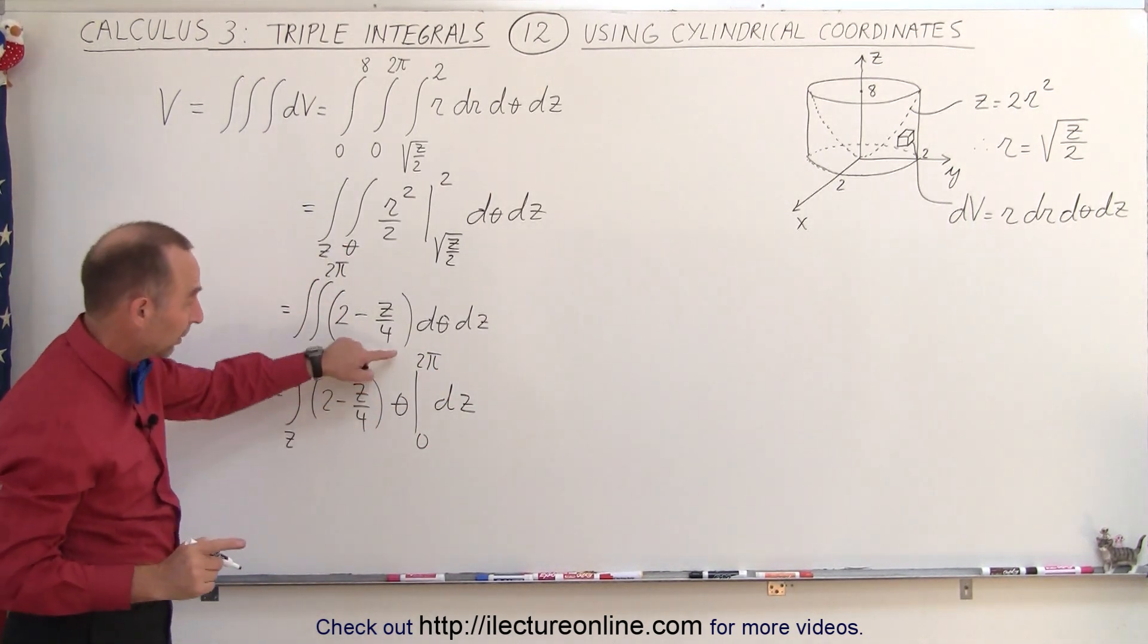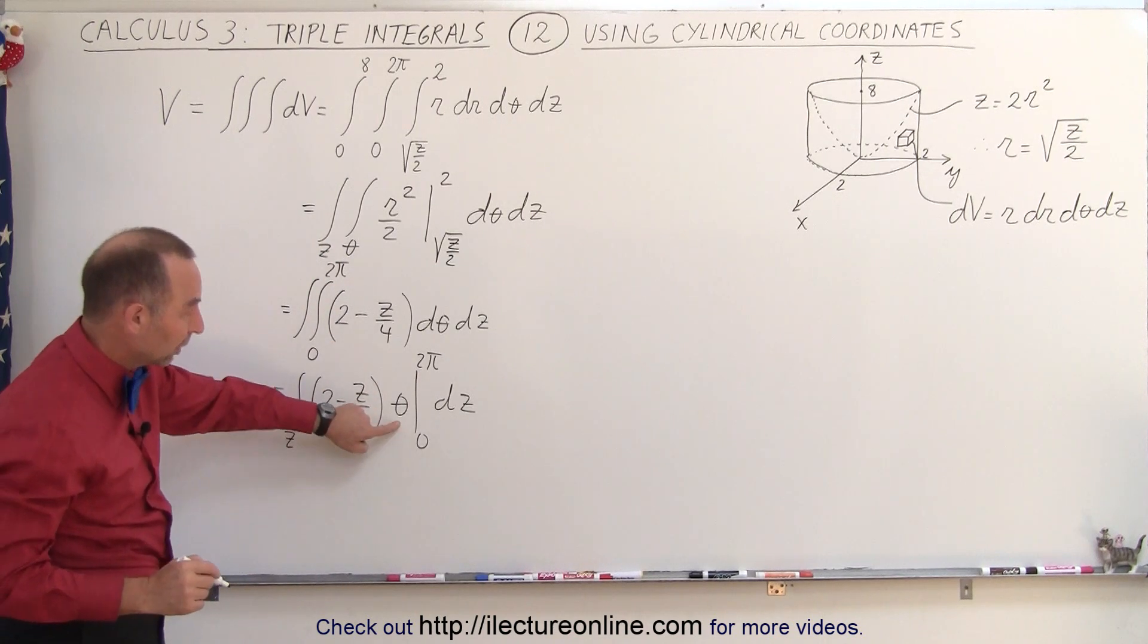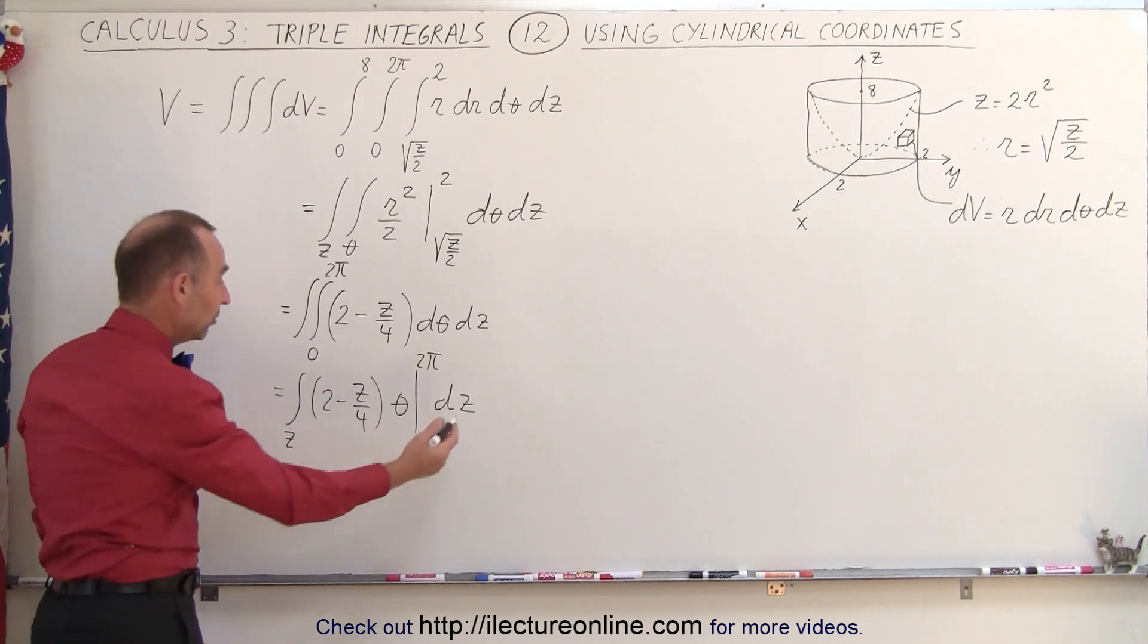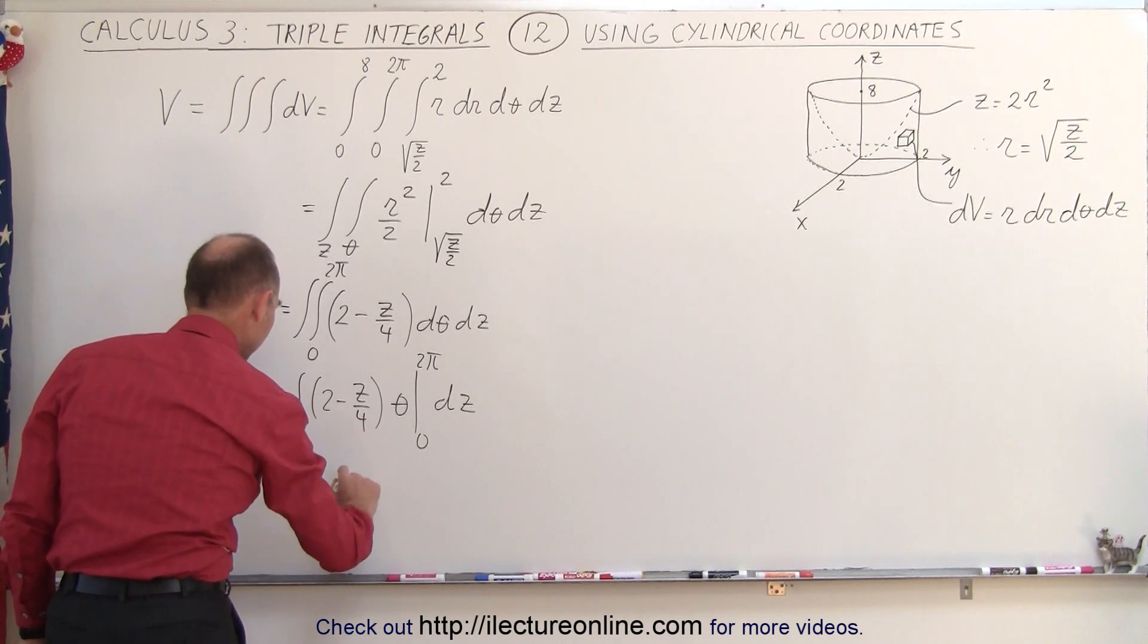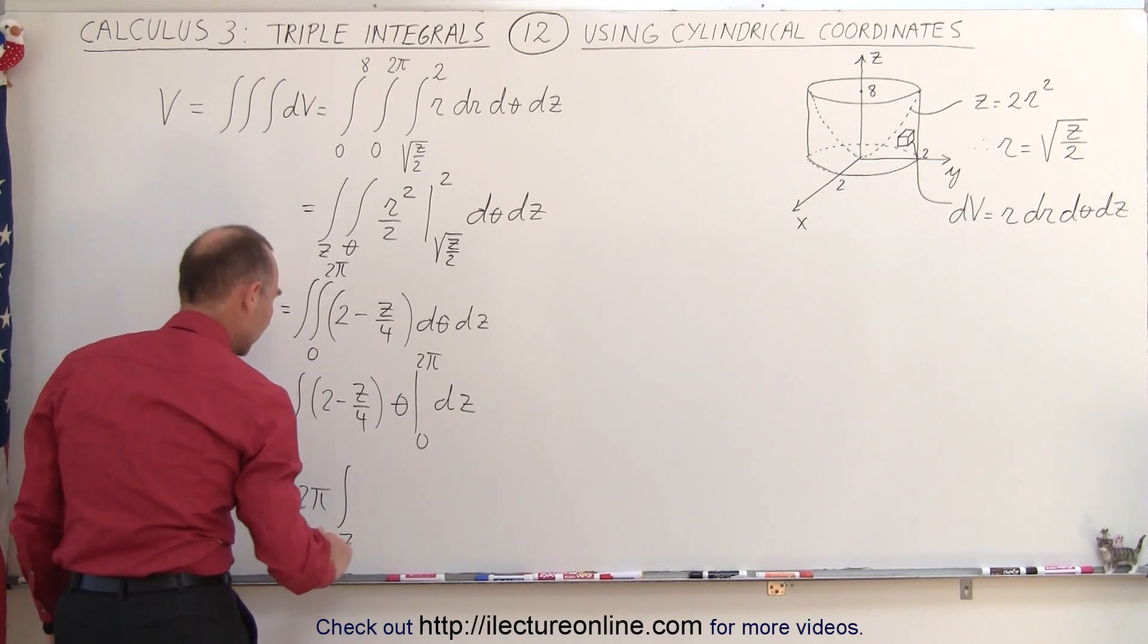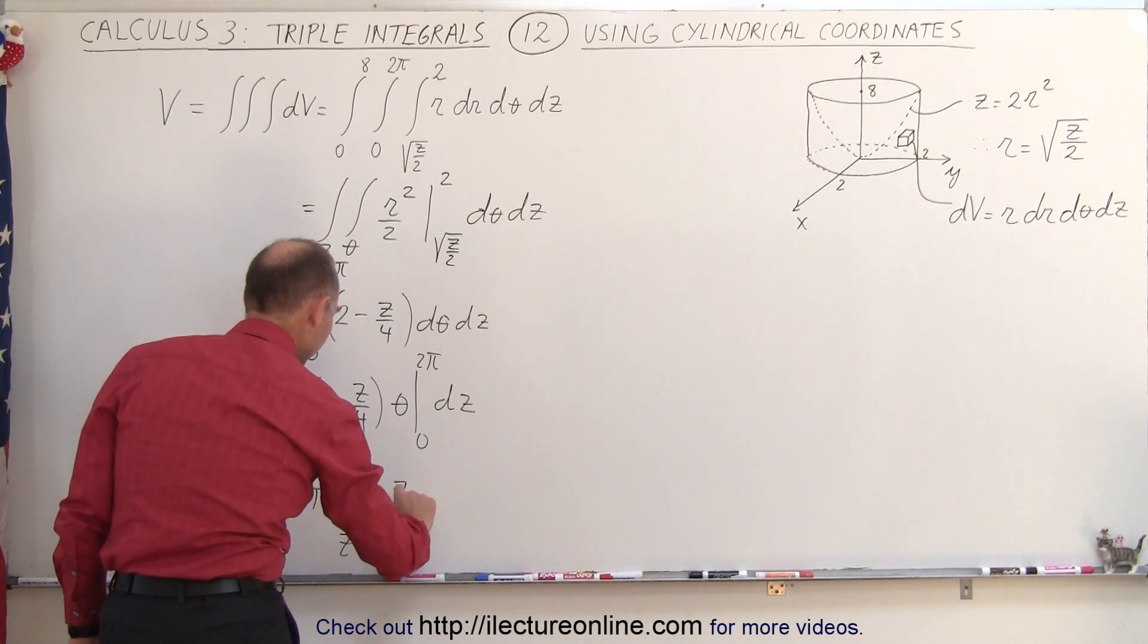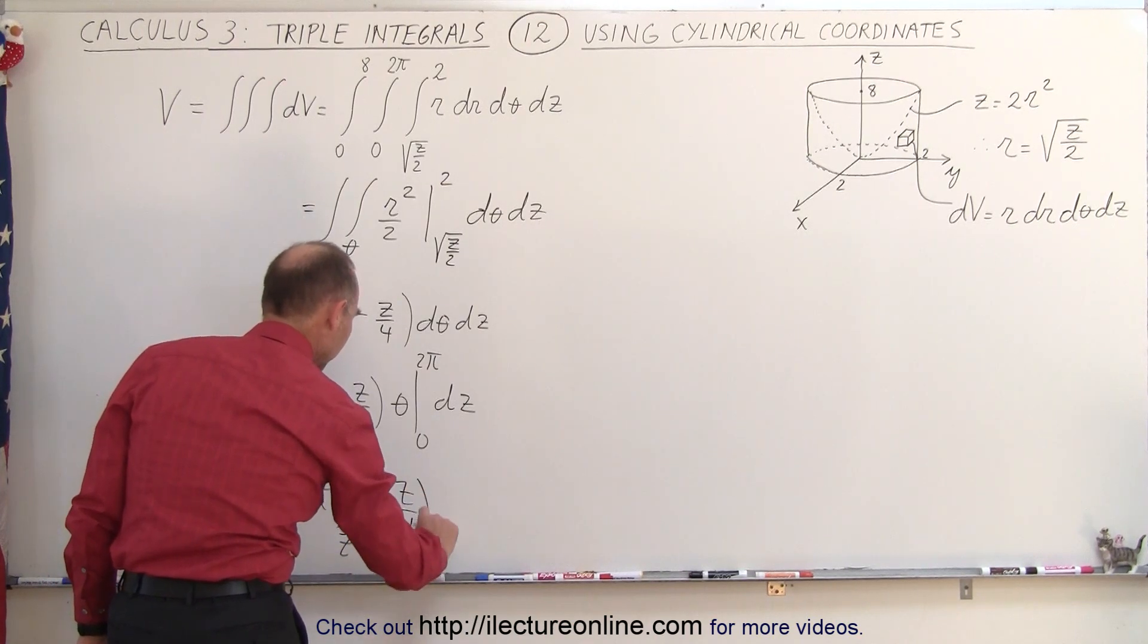Now, here, when we plug in the upper limit, we get 2 pi, plug in the lower limit, we get 0, so that means we can take the 2 pi outside integral. This is 2 pi times the integral over z of 2 minus z over 4, dz.